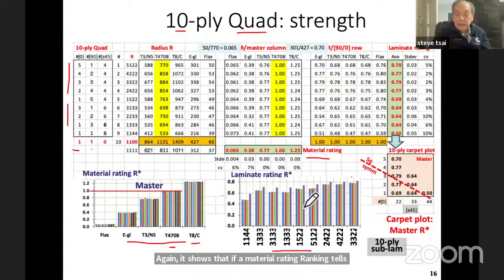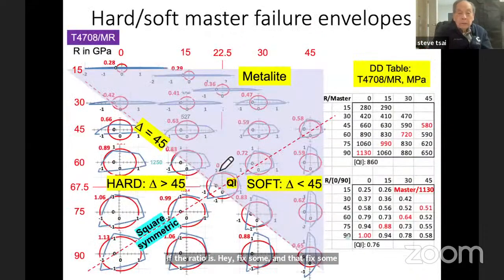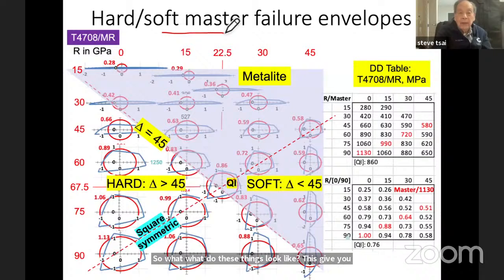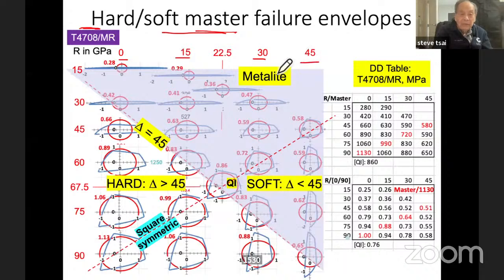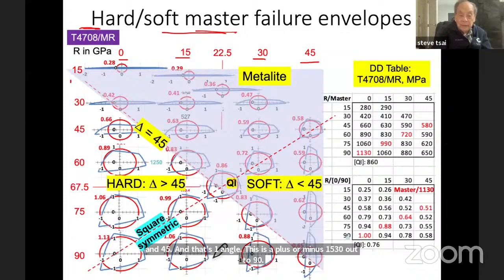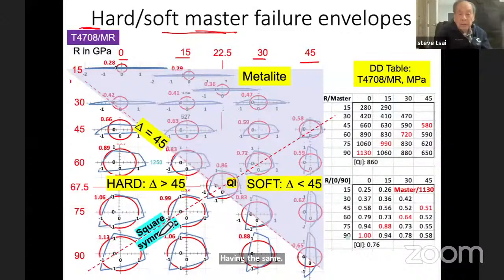This gives the overall view of the master failure envelope. The master happens to be this particular material, and it shows the double-double angles — zero, 15, 30, and 45 for one angle, plus or minus 15, 30, out to 90 for the other. These are the failure envelopes in blue, with the red circle having the same area. There are really two types of laminates. One is a hard laminate, where the angle difference is greater than 45 — strong in-plane resistance to dilatations (changes in size). The other is a soft laminate, when delta is less than 15, suited for resisting changes in shape (shear).